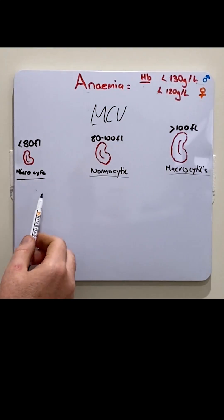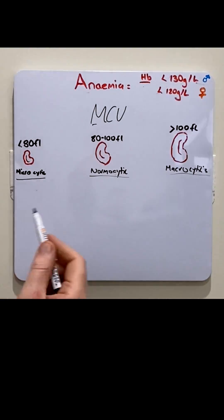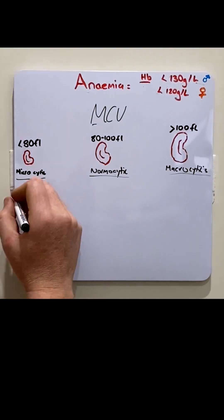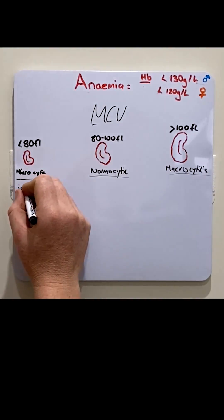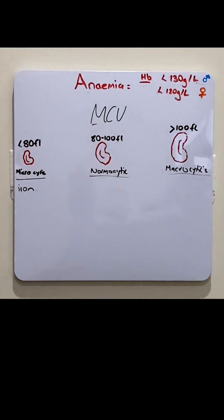Microcytic anemias are usually due to dysfunction in the way that hemoglobin is produced. One common subtype is iron deficiency anemia. This is due to a lack of iron, which then can't be incorporated into hemoglobin.